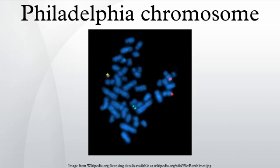Philadelphia chromosome, or Philadelphia translocation, is a specific chromosomal abnormality that is associated with chronic myelogenous leukemia. It is the result of a reciprocal translocation between chromosome 9 and 22, and is specifically designated T(9;22)(q34;q11). The presence of this translocation is a highly sensitive test for CML, since 95% of people with CML have this abnormality.